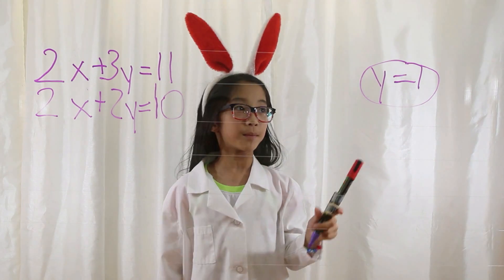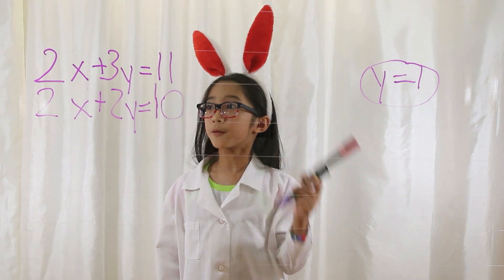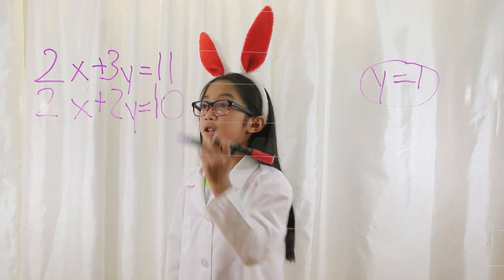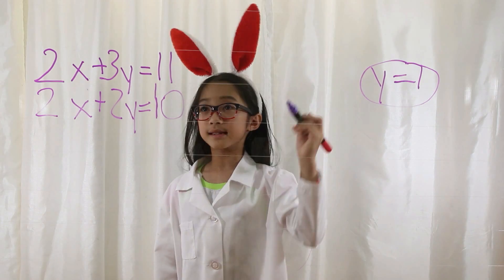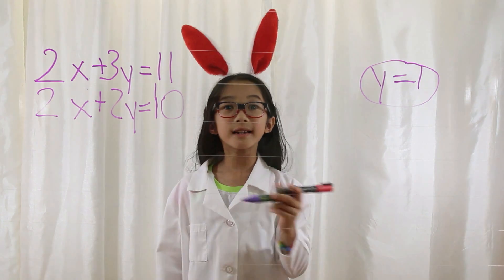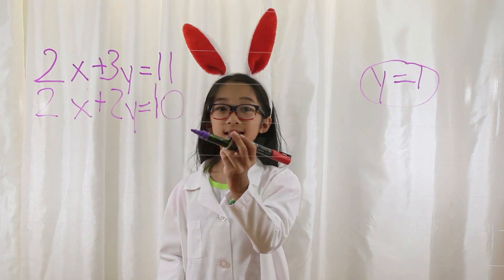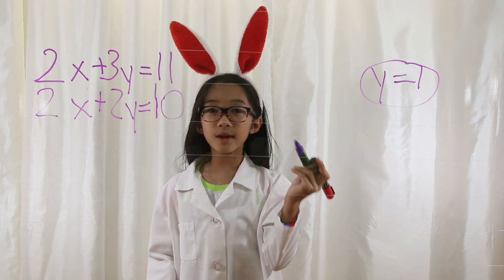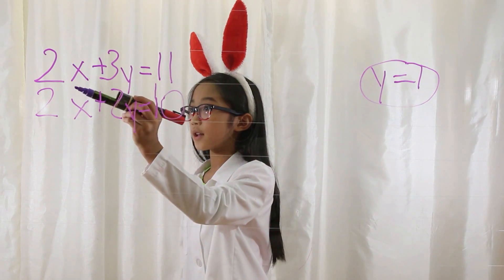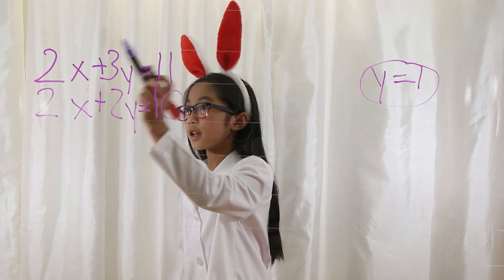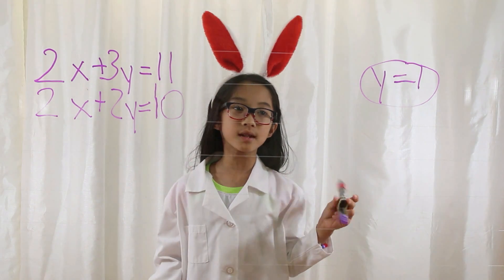Now solve for x by plugging y in. I'm going to use the first equation. So the first equation will look like 2x plus 3(1) equals 11. I take 3 times 1 which is 3. Then I take the constant which is 11. 11 minus 3 is 8. Then I take the first coefficient and I take 8 divided by 2. 8 divided by 2 is 4. x equals 4.